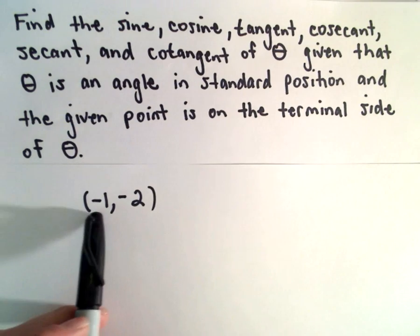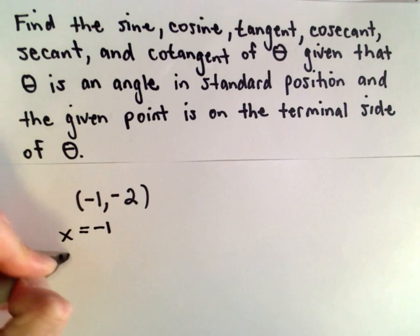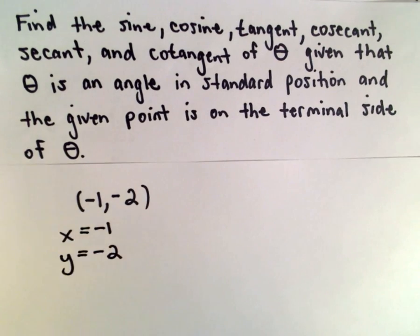So in this example we're going to use negative 1 comma negative 2. Our x value will be negative 1. Our y value is negative 2.